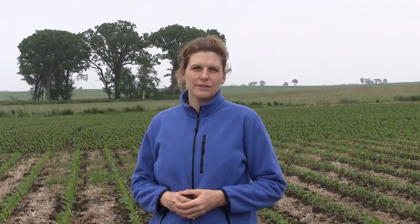Black cutworm larvae have seven larval instars, and it's the fourth larval instar that we're concerned about because that is the stage that can actually cut corn plants and lead to economic stand loss and yield loss. To determine when you may have potential fourth instar black cutworm larvae in a corn field, we use degree days — insect degree days for black cutworm.